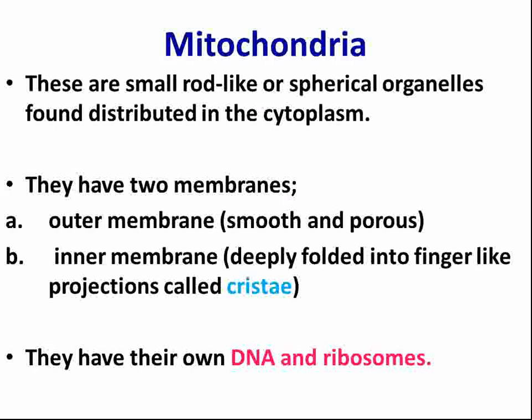Mitochondria have a double covering membrane — an outer membrane and an inner membrane. The outer membrane is smooth and porous, whereas the inner membrane is deeply folded into finger-like projections called cristae. Mitochondria have their own DNA and their own ribosomes, which is why they are known as semi-autonomous organelles.